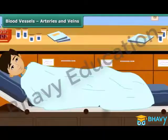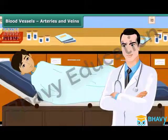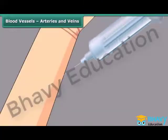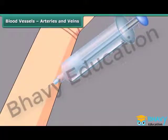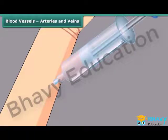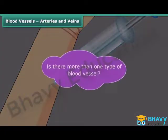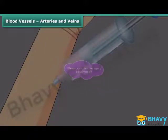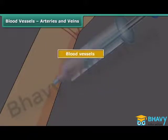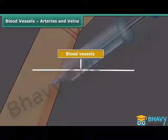When Rahul was unwell, his doctor recommended a blood test. The technician collecting blood first checks for a particular kind of blood vessel to pick and collect the blood. Is there more than one type of blood vessel? Yes, there are three types of blood vessels in our body.